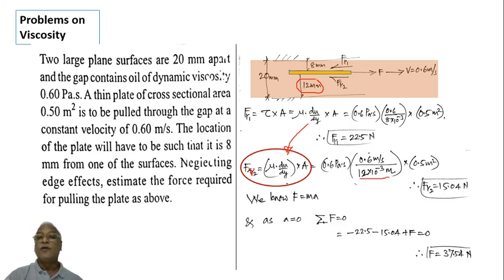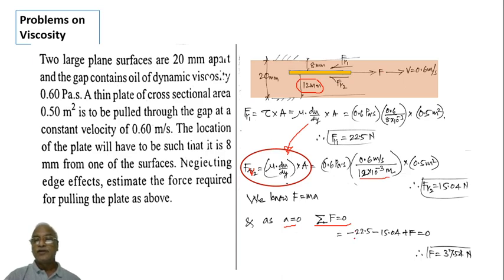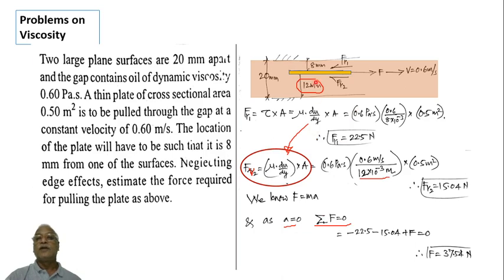Since the plate moves at constant velocity, sigma F equals zero. Applying the equation: plus F minus fv1 minus fv2 equals zero. Substituting fv1 as 22.5 and fv2 as 15 gives F equal to 37.54 Newtons. This is an interesting problem where a plate moves inside oil with different thicknesses on top and bottom.